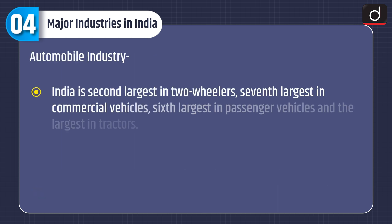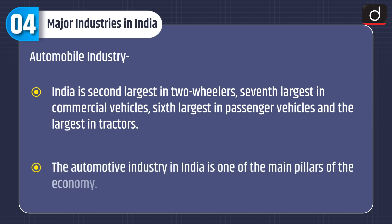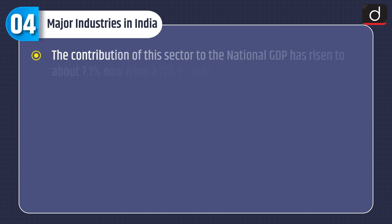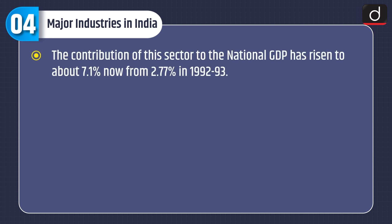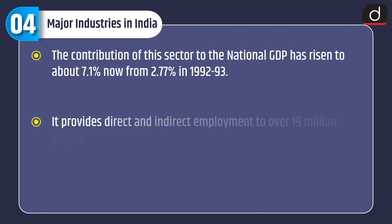Automobile industry: India is the second largest in two-wheelers, seventh largest in commercial vehicles, sixth largest in passenger vehicles, and the largest in tractors. The automotive industry in India is one of the main pillars of the economy. The contribution of this sector to the national GDP has risen to about 7.1% now from 2.77% in 1992-93, and it provides direct and indirect employment to over 19 million people.